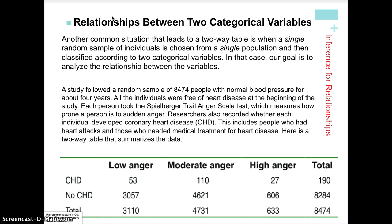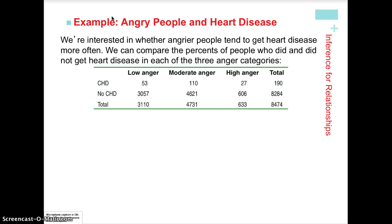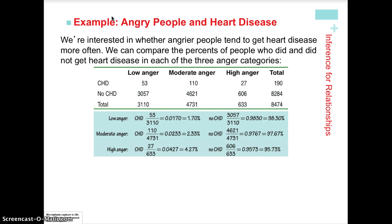These are a group of people classified by both variables and split up amongst different cells. We have a pretty large sample size of 8,474. To determine whether or not they're related, associated, or independent, we calculate all of the expected values and then expand the chi-square summation formula.